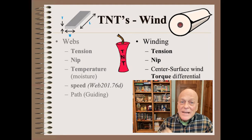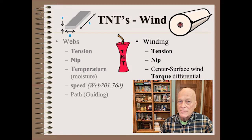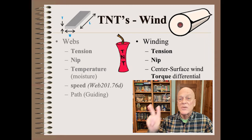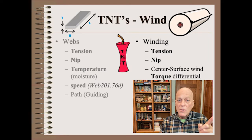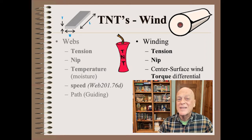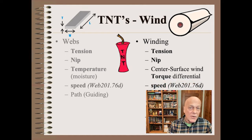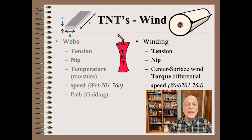The second T is shorthand for center surface wind torque differential. Very few winders have this tightness knob because it requires two motors — one on the roll and one on the roller — with all of the attendant mechanical and control costs and complexities. My students will also note that the S stands for speed; however, the S is lowercase because only a few winding systems are speed dependent.